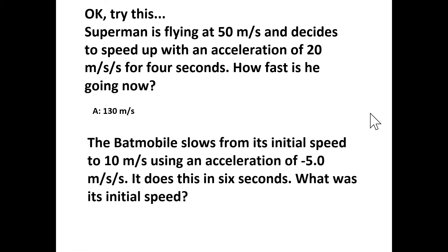The Batmobile slows from its initial speed using an acceleration of negative 5 meters per second every second for 6 seconds, ending at 10 meters per second. What was its initial speed? We take the acceleration (negative 5 m/s²) multiplied by 6 seconds — the seconds cancel — giving a change in velocity of negative 30 meters per second. If the velocity decreased by 30 m/s and ended at 10 m/s, the initial velocity was 40 meters per second.